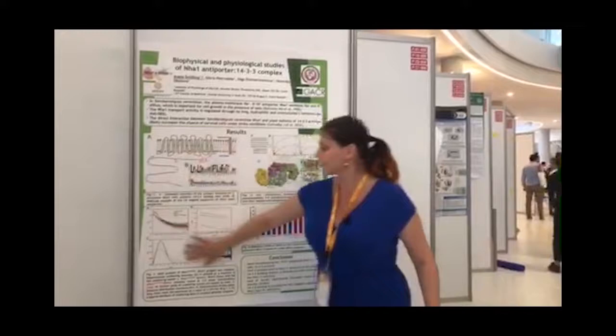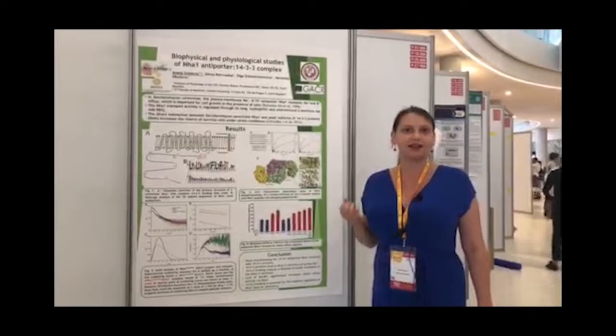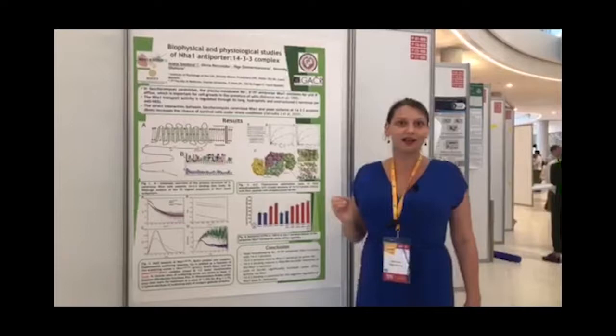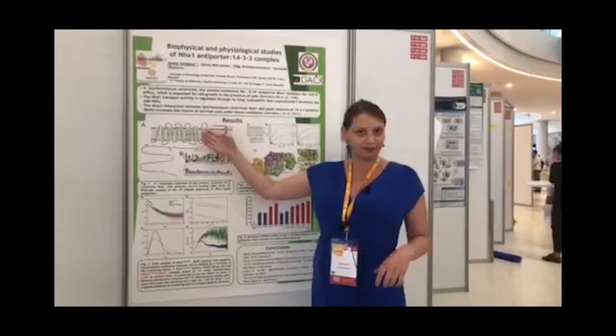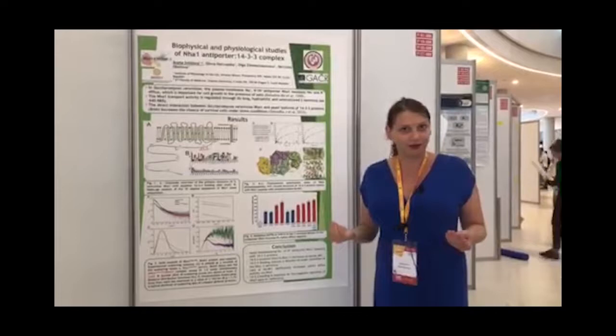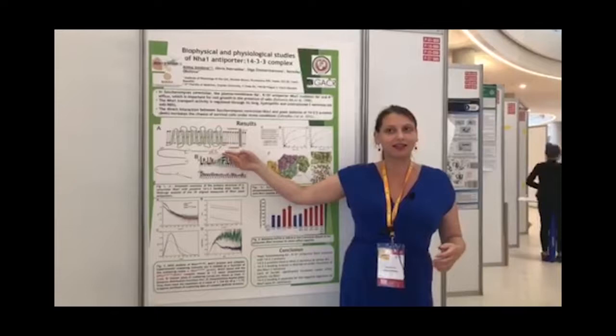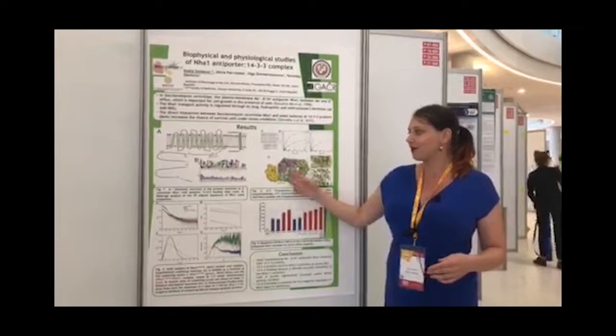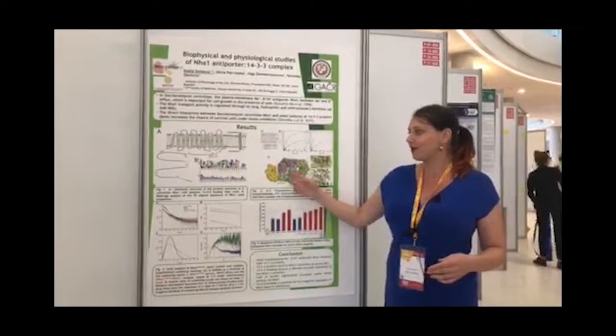Based on the results from all these experiments, we think that 14-3-3 protein is a negative regulator of the NHA1 antiporter. We also consulted our results with the literature and found another antiporter in mammals that also interacts with 14-3-3 protein. We were quite surprised that in our case 14-3-3 is a negative regulator, but in mammals it is an activator. We think that 14-3-3 protein is a common regulator in any case of target proteins.